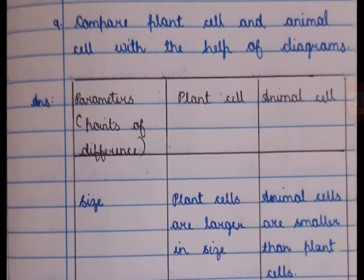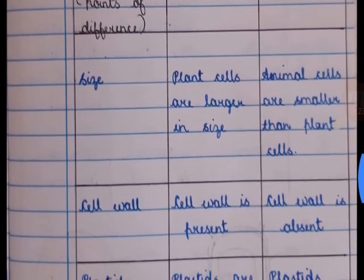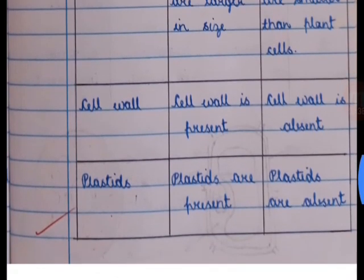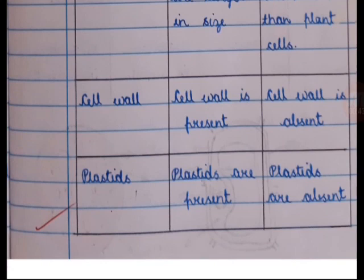Question 9: Compare plant cell and animal cell. Parameters: plant cells are larger in size; animal cells are smaller than plant cells. Cell wall is present in plant cells; cell wall is absent in animal cells. Plastids are present in plant cells; plastids are absent in animal cells.